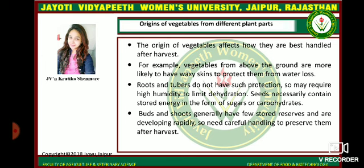For example, vegetables from above ground are more likely to have waxy skin to protect them from water loss. Roots and tubers do not have such protection, so they may require high humidity to limit dehydration. Seeds necessarily contain stored energy in the form of sugars or carbohydrates. Buds and shoots generally have few stored reserves and are developed rapidly, so they need careful handling to preserve them.